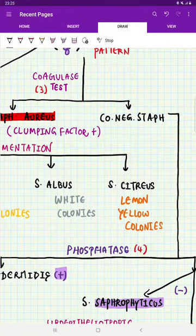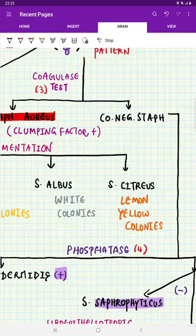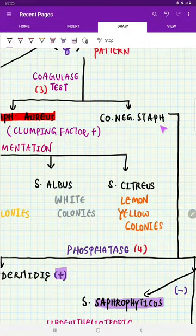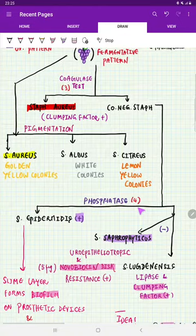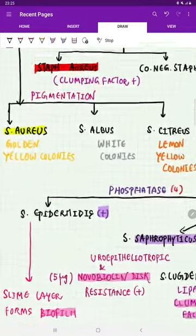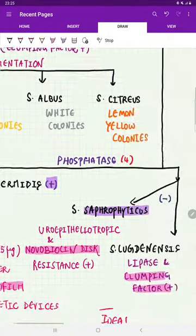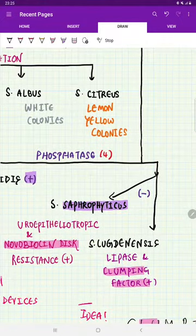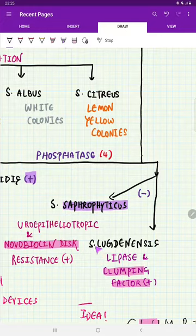So remember, the next thing is coagulase test and phosphatase. After coagulase test turns negative for a staphylococcus, do a phosphatase test. In the phosphatase test, if it is positive, it is Staphylococcus epidermidis. If it is negative, there are other organisms but important ones are Staphylococcus saprophyticus and Staphylococcus lugdunensis.